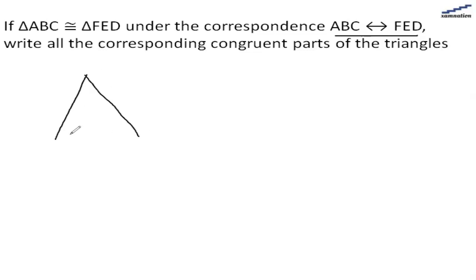So we have this triangle ABC and its equivalent triangle, or the congruent triangle, is FED. Basically we have to write the corresponding congruent parts.